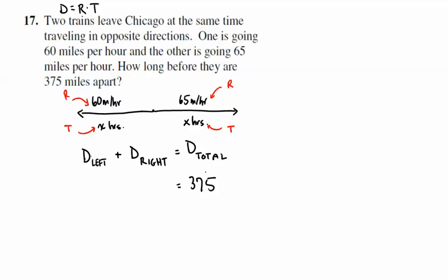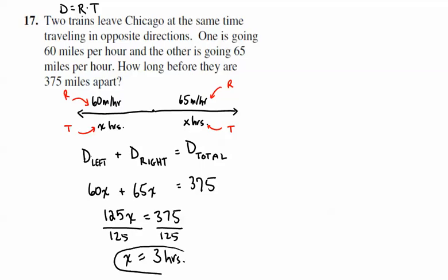We don't know the distance, but we do know that distance is rate times time. So we're going to have 60 miles per hour times the number of hours plus 65 miles per hour times X hours is going to give us a total of 375 miles. And so 60, 65, that's 125X equals 375. And we're just going to divide both sides by 125. And I think that comes out to be exactly 3 hours. So 60 times X plus 65 times X is equal to 375. That's only true when X is 3 hours.